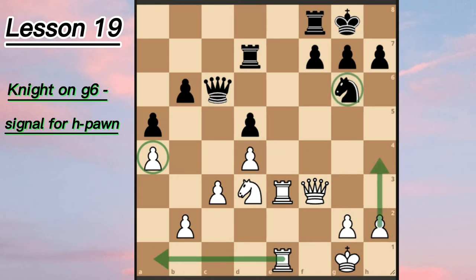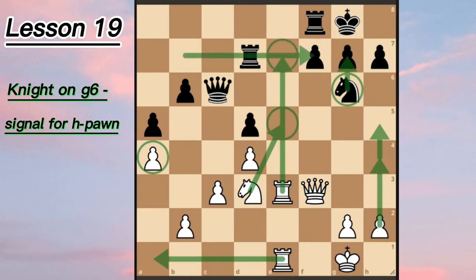Unfortunately for Black, White has a very nice and easy plan to attack. The plan is connected with moving the h4 pawn, then taking the e5 square, and after the knight goes away somewhere, White's rooks can just enter the e-file.